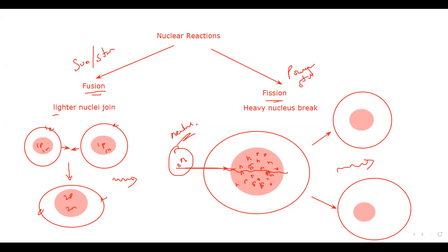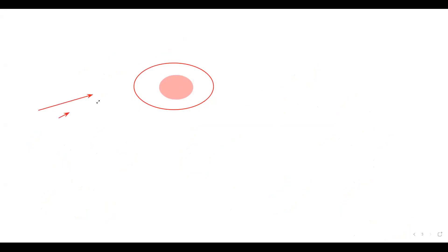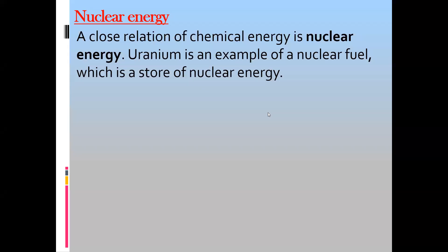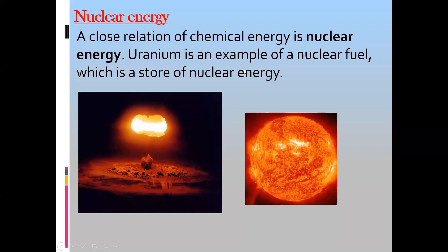Nuclear fusion occurs on the Sun and stars. Nuclear fission is performed at nuclear power stations. Nuclear bombs and hydrogen bombs also use nuclear reactions. The energy stored in the nucleus is called nuclear energy, which can be released by nuclear fission or nuclear fusion.